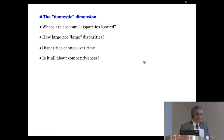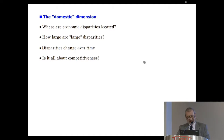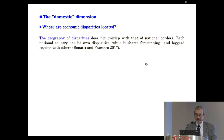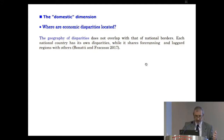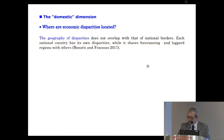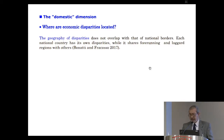Starting from the domestic dimension, there are four issues. The first: where are economic disparities located? The geography of disparity does not overlap with that of national borders. Each national country has its own disparities while it shares frontier and laggard regions with others — an important cross-border problem. This creates serious problems, foremost for policy purposes, that can no longer be ignored if disparities are simply read at the national level, as is usually done.